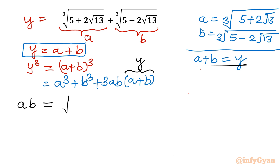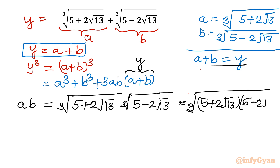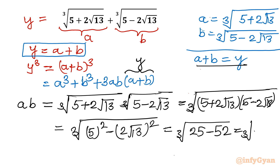What is the value of a·b? So a = cube root of (5 + 2√13) and b = cube root of (5 − 2√13). In the next step we can write the product using difference of squares: a·b = cube root of [(5 + 2√13)(5 − 2√13)] = cube root of [5² − (2√13)²] = cube root of [25 − 4×13] = cube root of [25 − 52] = cube root of −27.